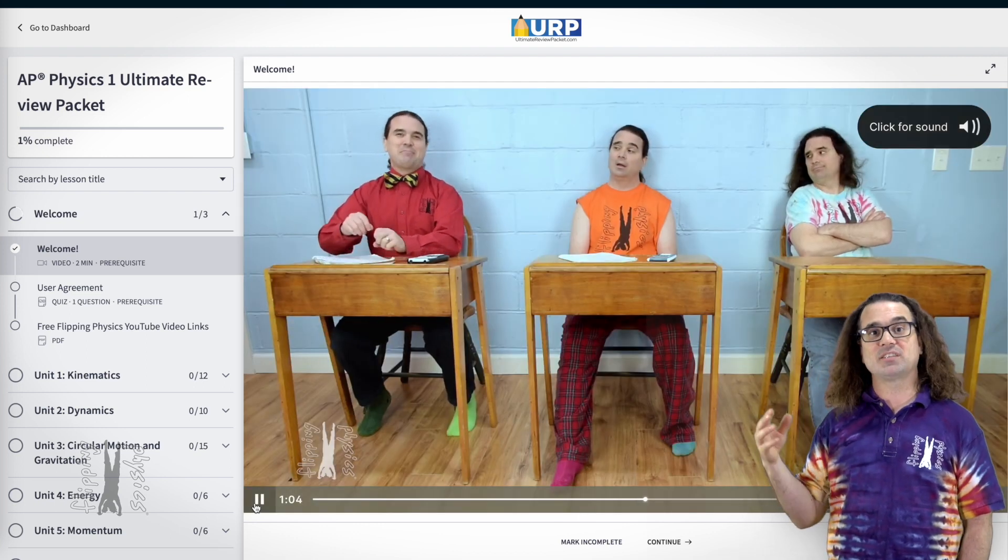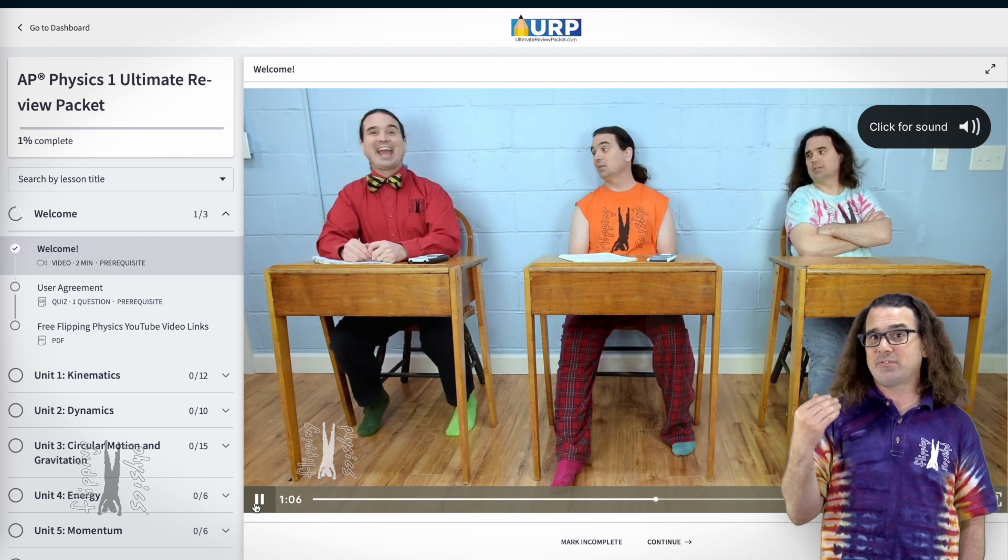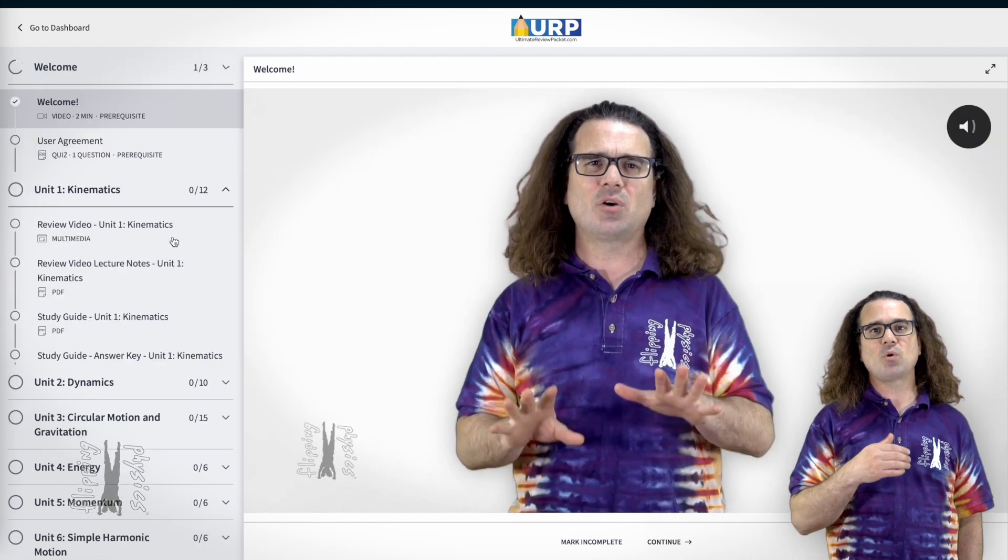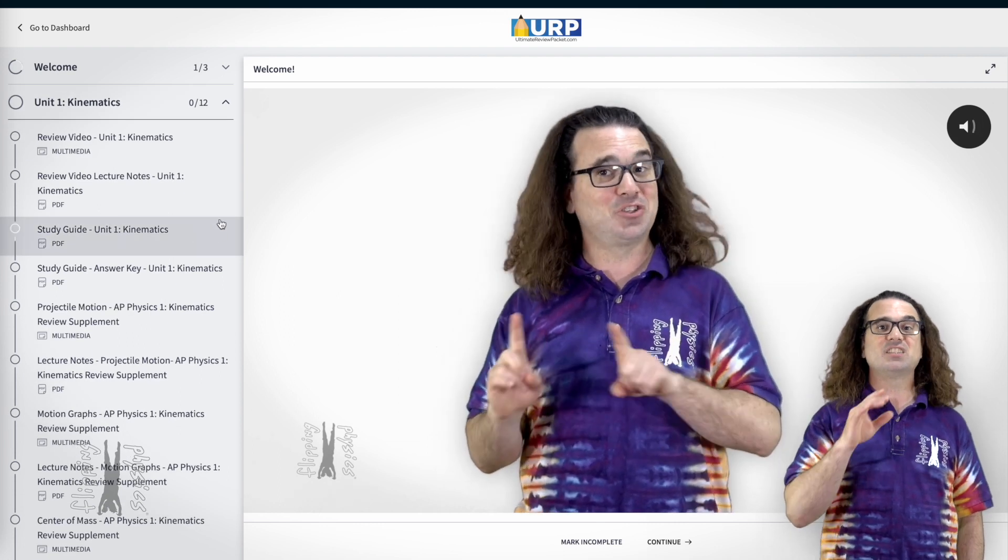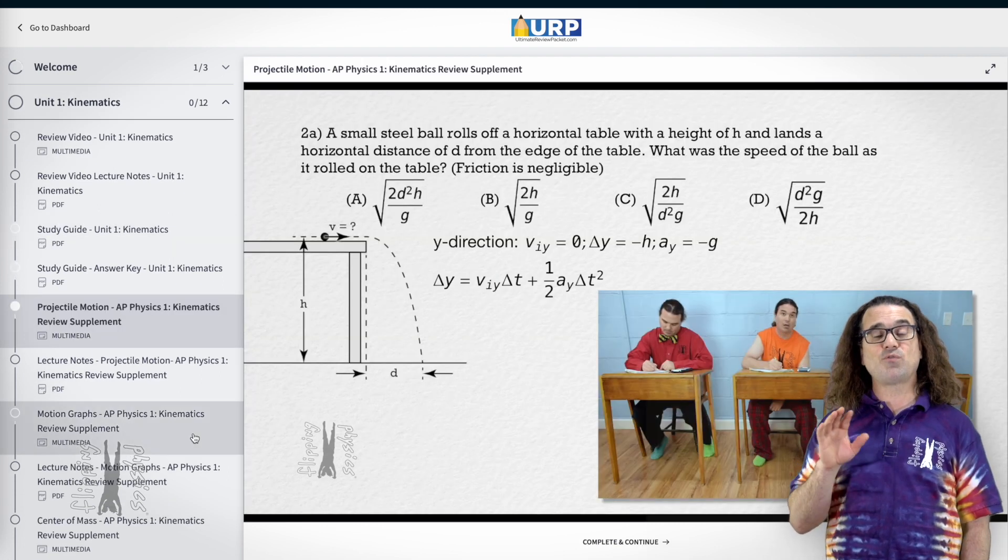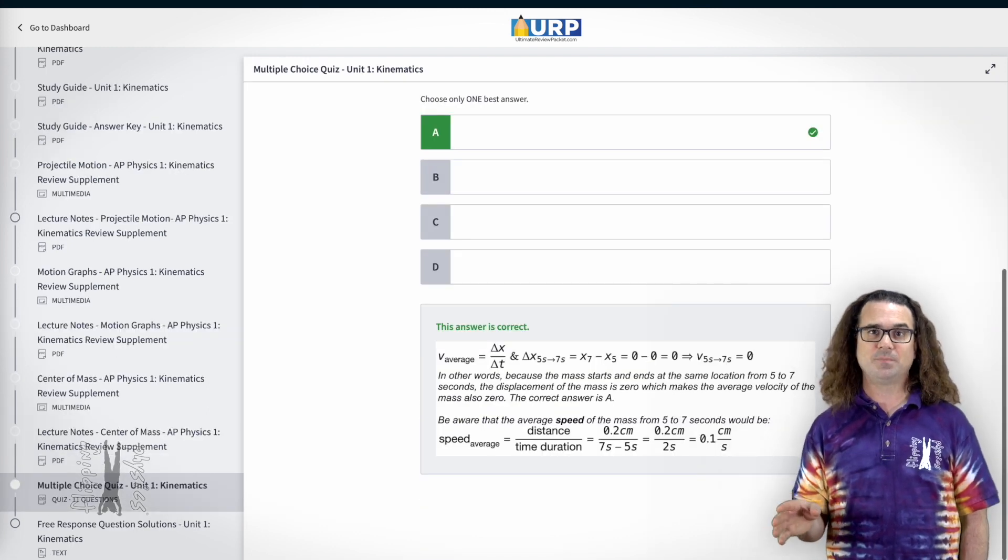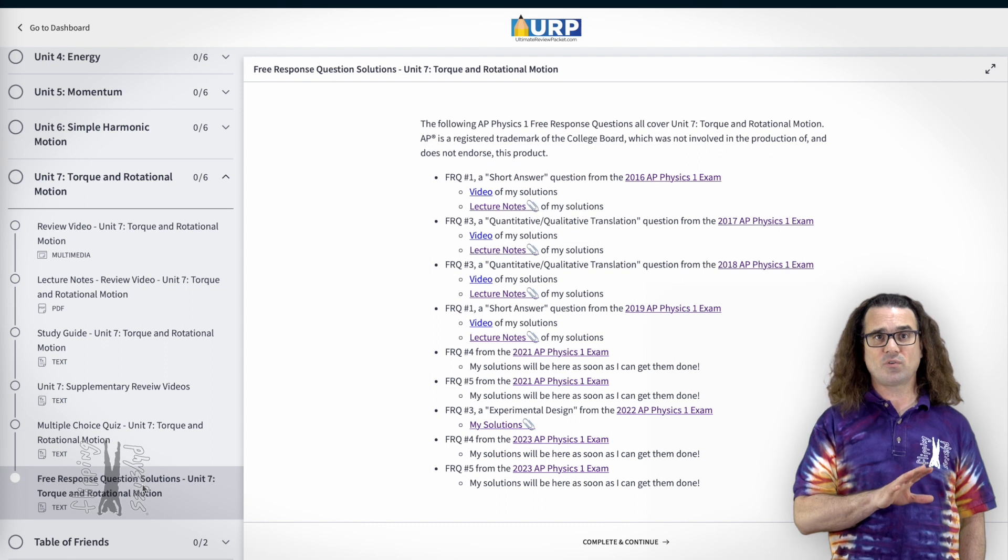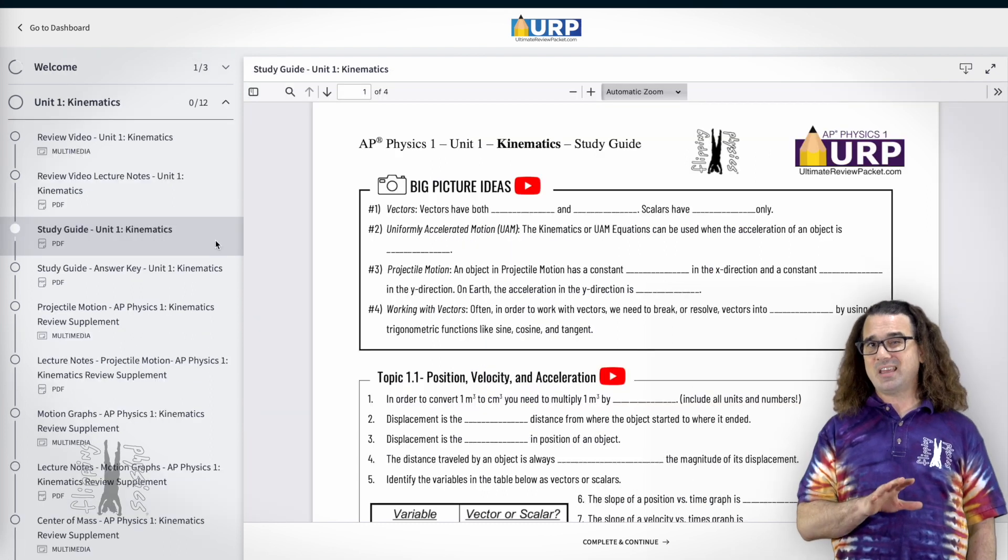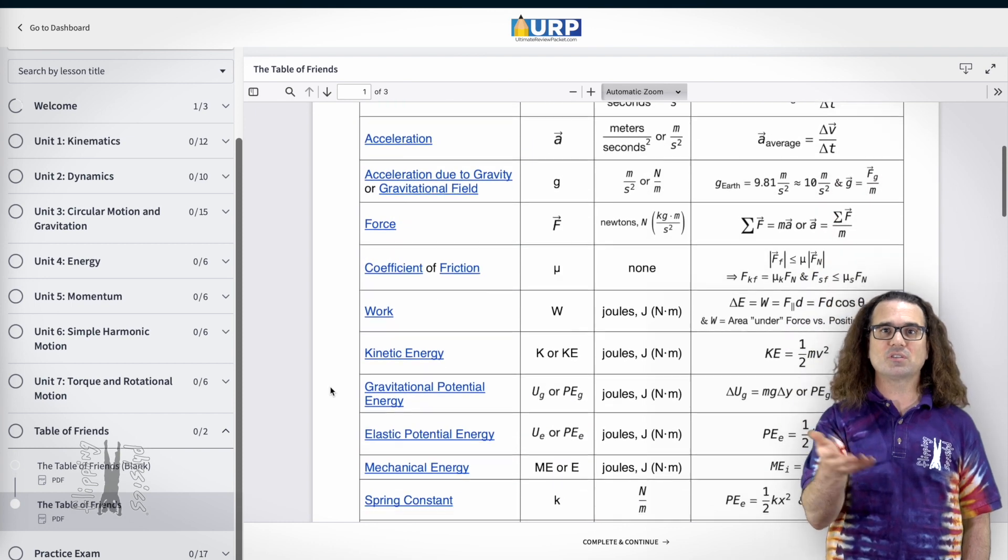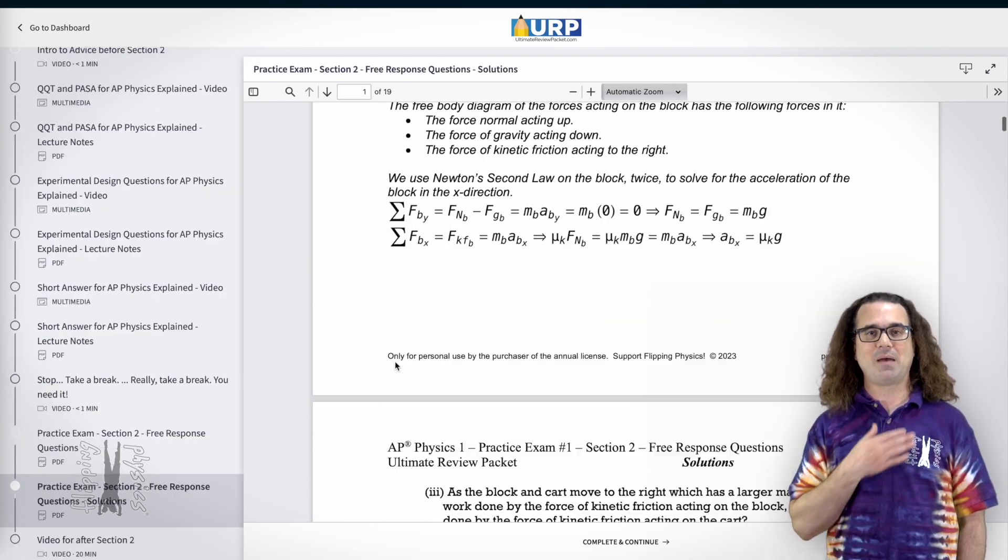I already have my AP Physics 1 review videos available for free on YouTube, so what I will be creating for my AP Physics 1 Ultimate Review Packet are additional supplementary review videos for each unit, practice multiple choice questions and solutions for each unit, free response question solutions for each unit, a fillable study guide for each unit, and a fillable table of friends. And of course, the AP Physics 1 practice exam I made last year.